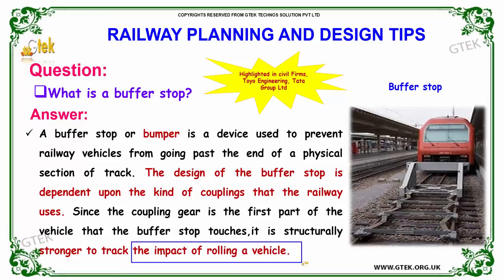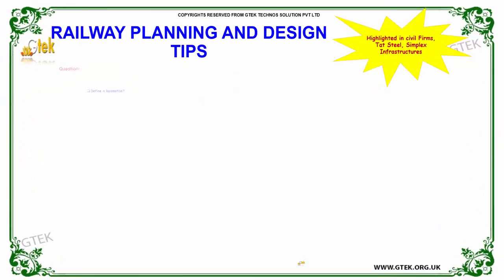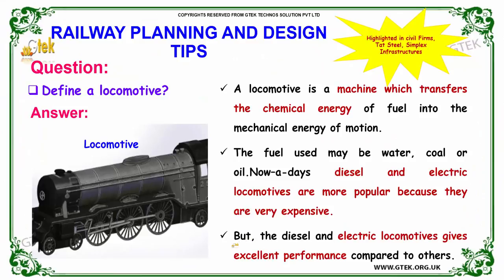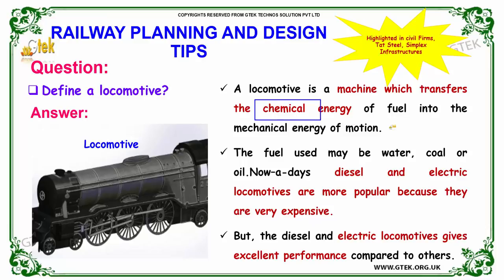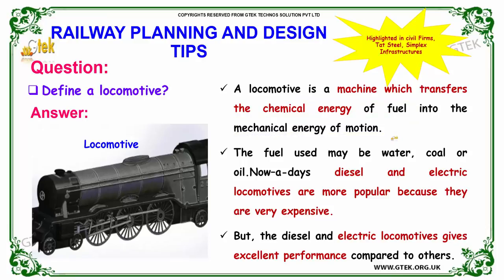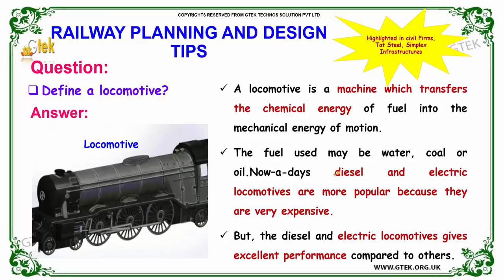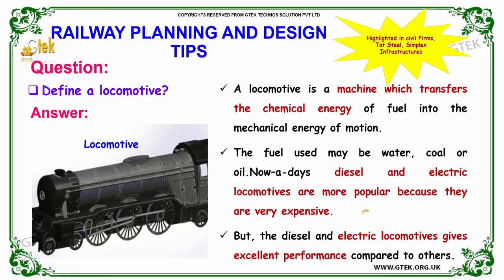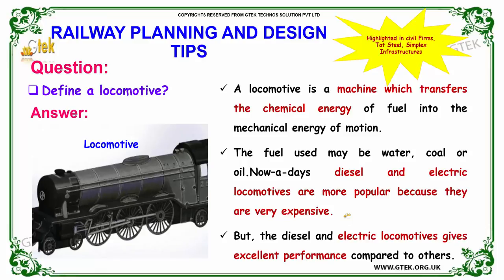The next question: define locomotive. A locomotive is a machine which transfers the chemical energy of a fuel into mechanical energy of motion. The fuel used may be water, coal, or oil. Nowadays, diesel and electric locomotives are more popular and give excellent performance compared to others.